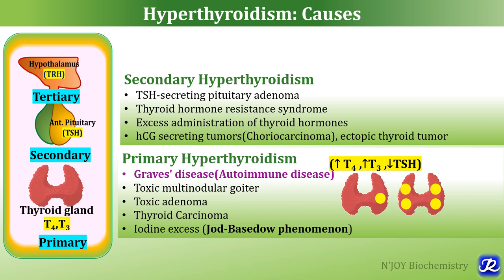Secondary hyperthyroidism causes include TSH-secreting pituitary adenoma, thyroid hormone resistance syndrome, excess thyroid hormone administration, or choriocarcinoma and ectopic thyroid tumor. In secondary hyperthyroidism, both T3 and T4 are increased but TSH is also increased, because the negative feedback mechanism is not operative — the pathology is in the pituitary gland itself.